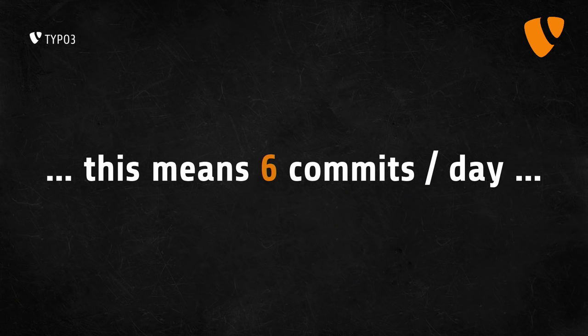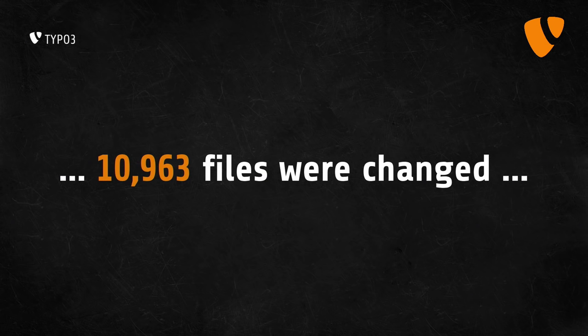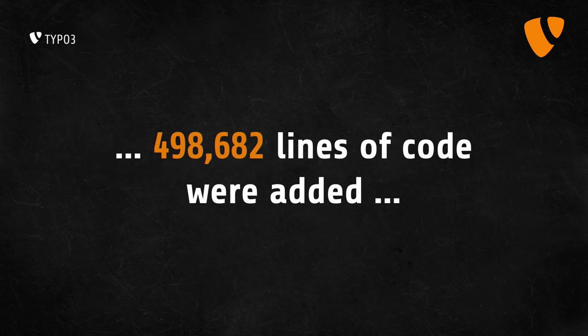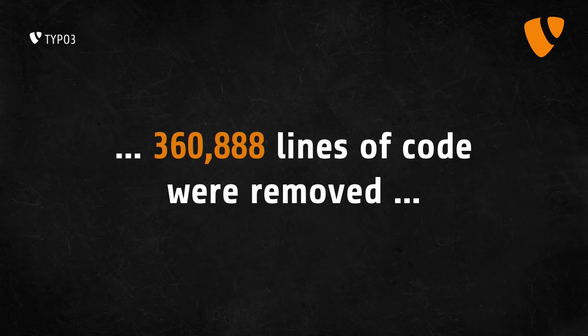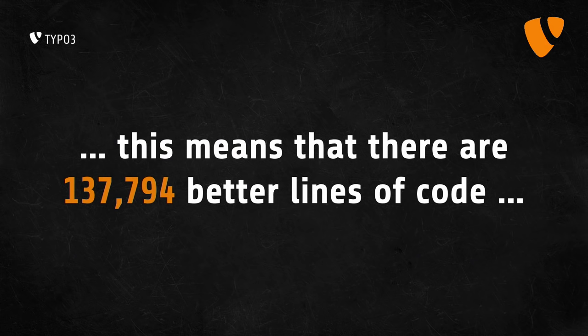We compiled a little bit more in terms of numbers. We do know that we touched about 11,000 files in total — boy, that's a lot. We added roughly 500,000 lines of code, which is good, but we removed 360,000 lines of code, which is better. And for those really good at math, this basically means that we have 138,000 lines of better code in the core right now.